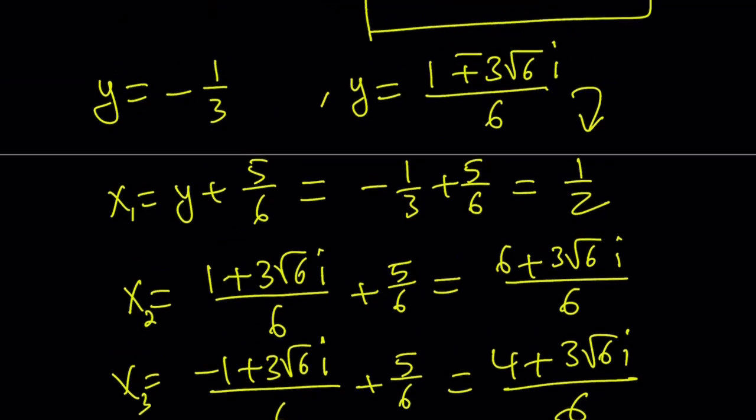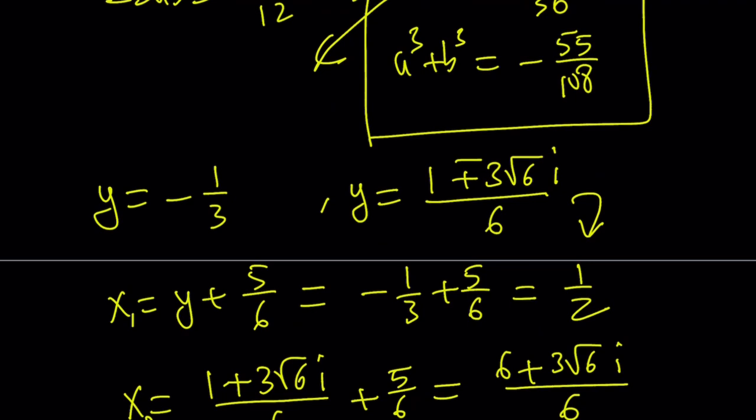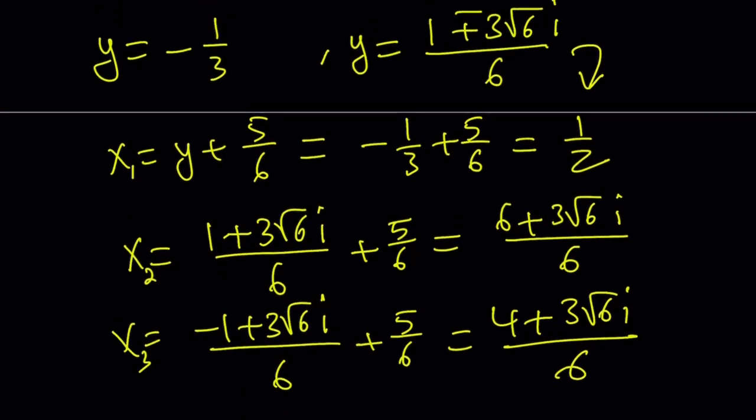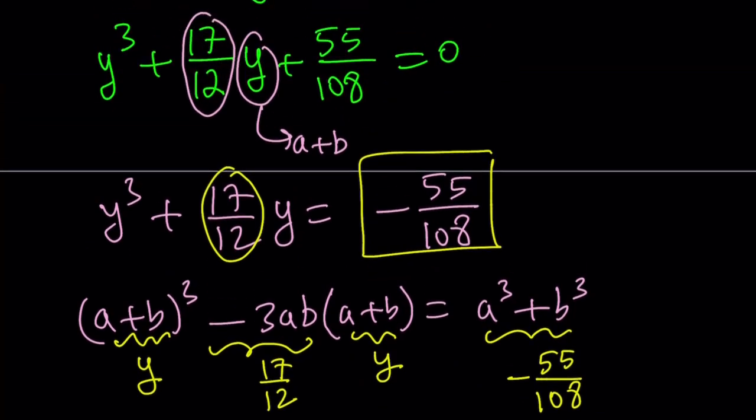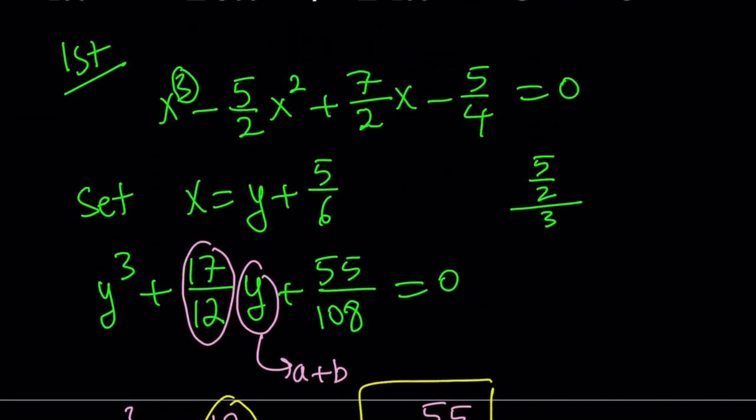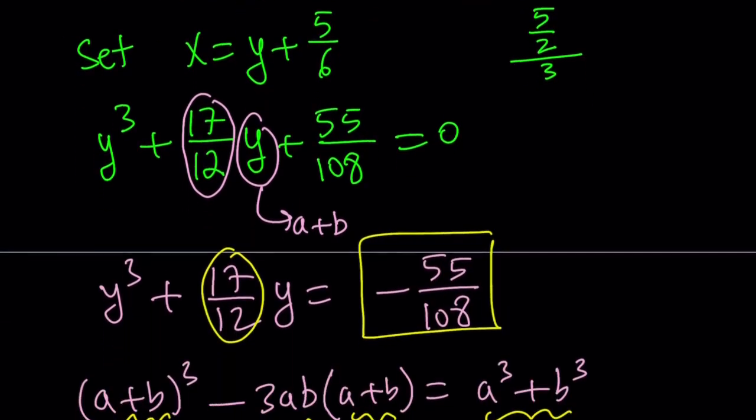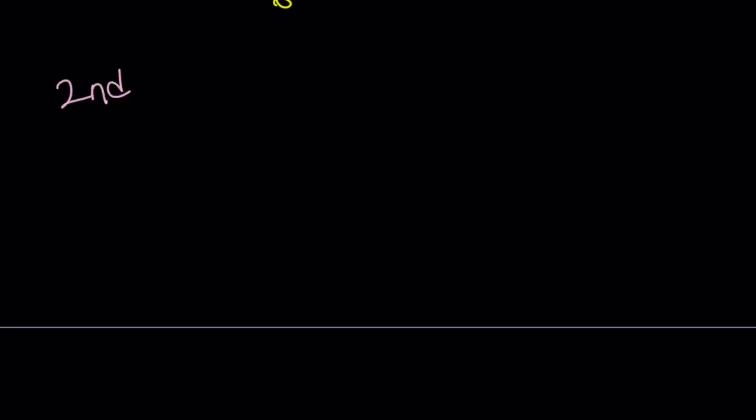So those are going to be the solutions, and I have a cubic, so we should be expecting three solutions, right? From a cubic equation. Well, it was actually a quartic, but we kind of turned it into... Well, it wasn't a quartic. What am I talking about? Okay, never mind. I got confused. So that is my first approach. And let's go ahead and take a look at the second approach, or the second method.